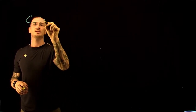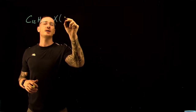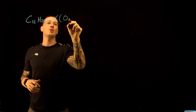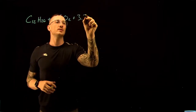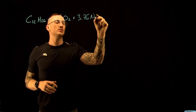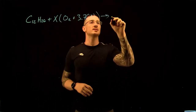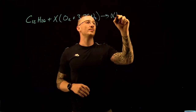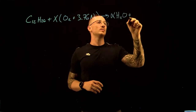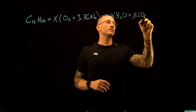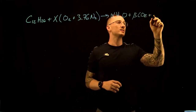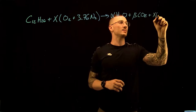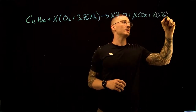We're now going to look at our stoichiometric equation. We're told we're burning a fuel that's C12H26 plus some x amount of air, so O2 plus 3.76N2. This becomes some alpha amount of water plus some beta amount of carbon dioxide plus x times 3.76N2.